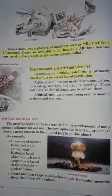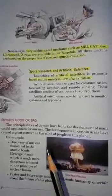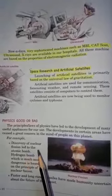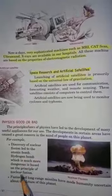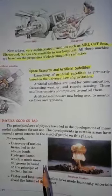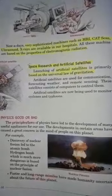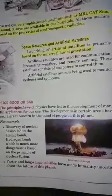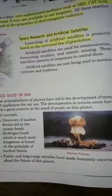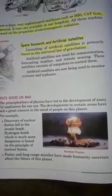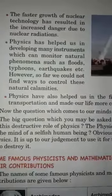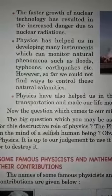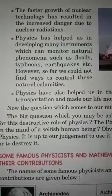We have given some examples. The first one is the discovery of nuclear fission led to the atomic bomb and hydrogen bomb, which is much more dangerous, based on the principle of nuclear fusion. Faster long-range missiles have made humanity uncertain about the future of this planet. Some nuclear technology has also resulted in increased danger due to nuclear radiation.